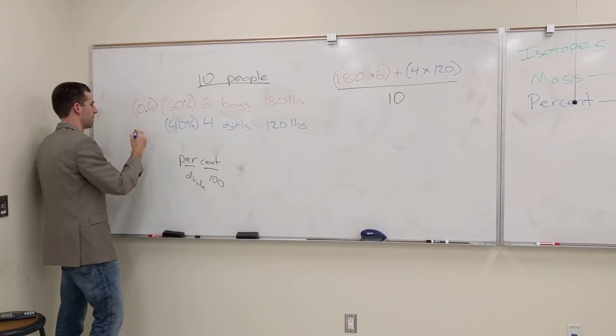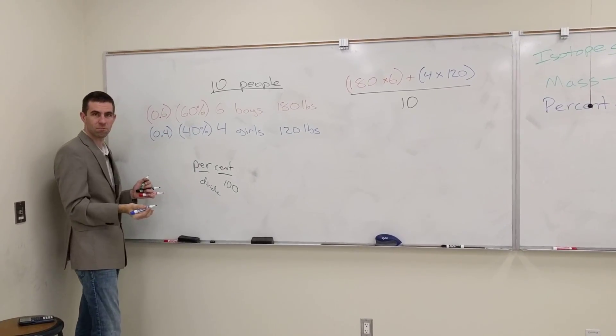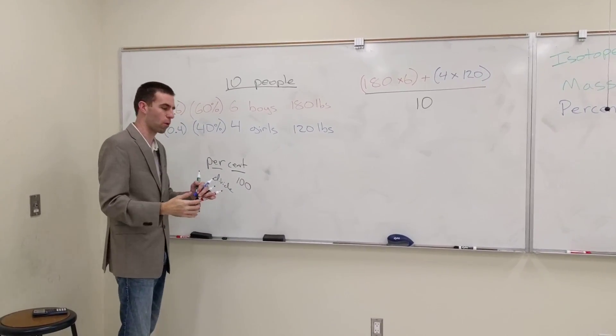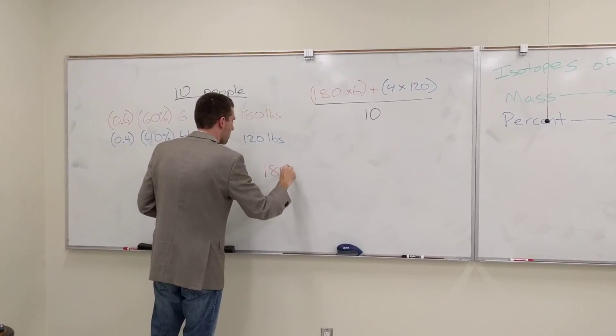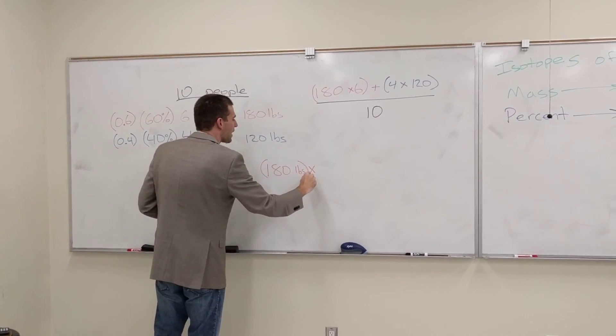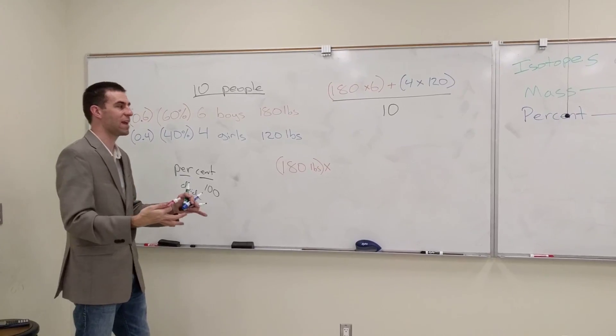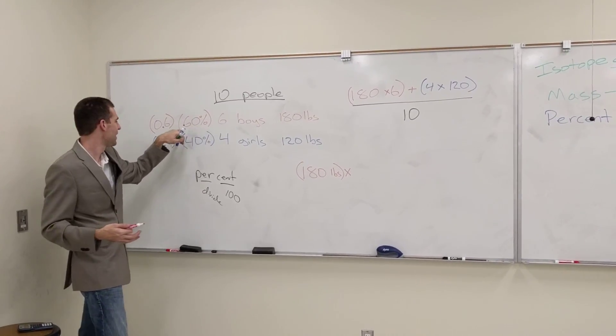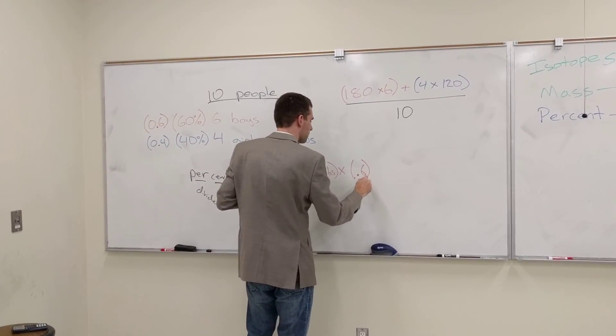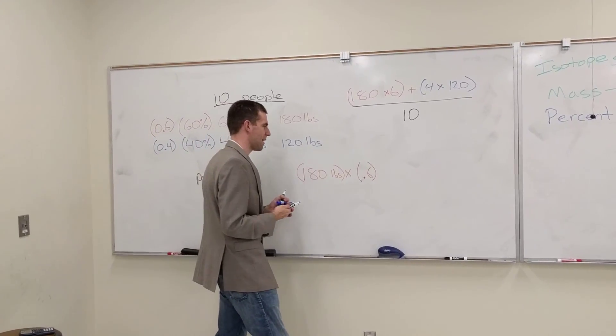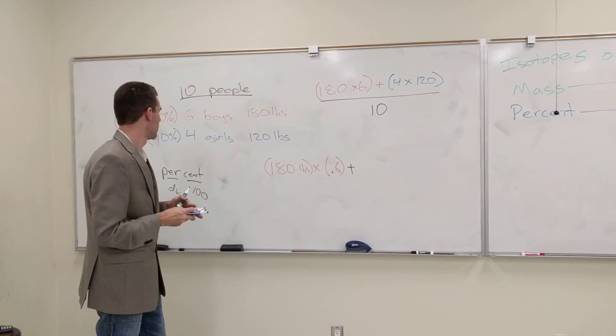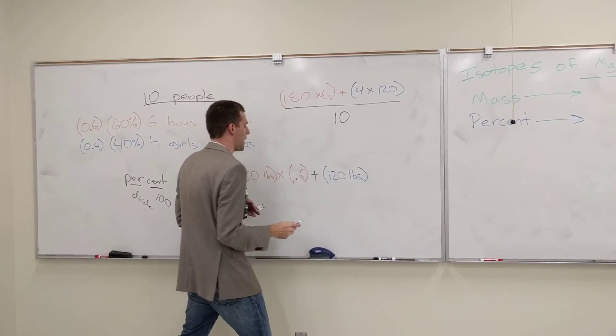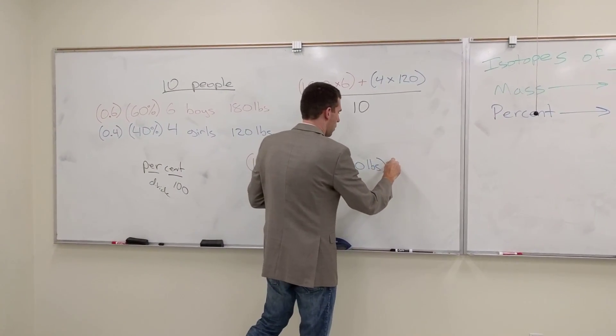So we're going to use these numbers, 0.6 and 0.4, to refer to how much of the weight each of these account for. If the boys are 180 pounds, I can multiply that by the fraction of the weight the boy accounts for. Because 60% of them are boys, it would be a weight of 0.6. Now let's add that to the girls. How much do the girls weigh? 120 pounds. And what fraction of the weight is from the girls? 0.4.